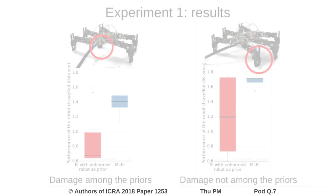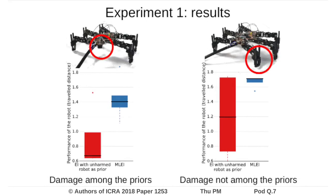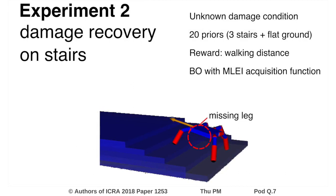Here are the final results for 5 replicates of this experiment after 10 iterations. Here is another experiment on a damaged six-legged robot learning to climb stairs in simulation. The priors are now gaits of a robot climbing stairs with various kinds of stairs but with no damage.